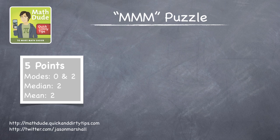Before we start in on solving this puzzle, let's quickly review the differences between the three M's of averaging. Let's look at the list of numbers 1, 2, 2, 2, 3.